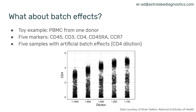As an example, we're using a toy dataset that was acquired by Brian Sellers at the National Institute of Health. We took PBMC from one donor and stained it with just five markers, and we introduced an artificial batch effect by diluting CD4. So we're seeing five samples, five different dilutions of CD4, and in each of these the staining quality of CD4 is pretty good — you can effectively identify the CD4 T-cells — but there is some variation in the intensity of the high peak of the positive cells.